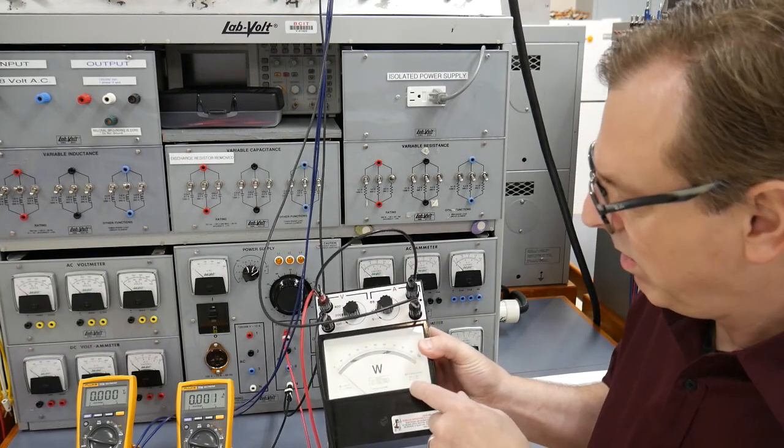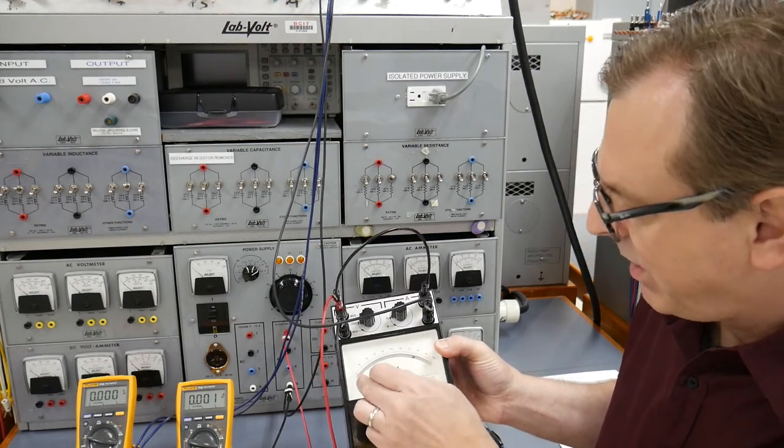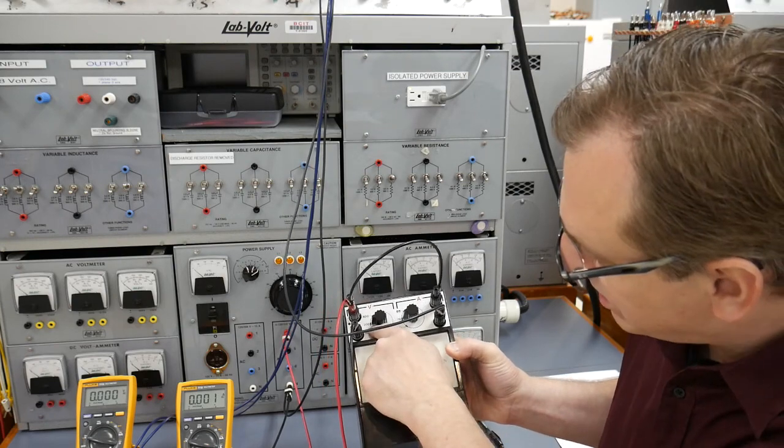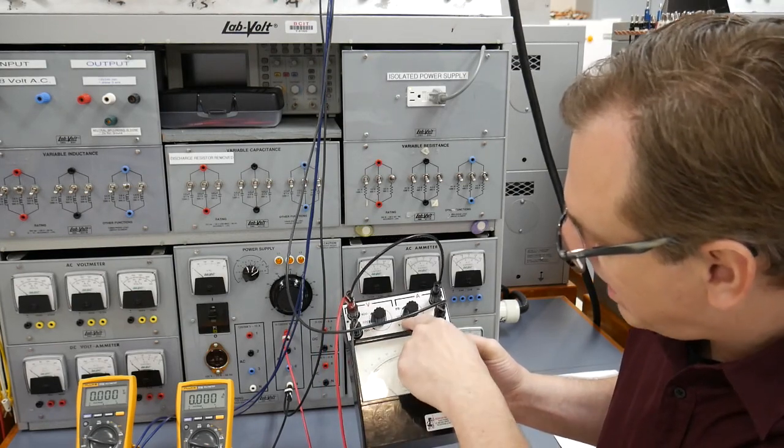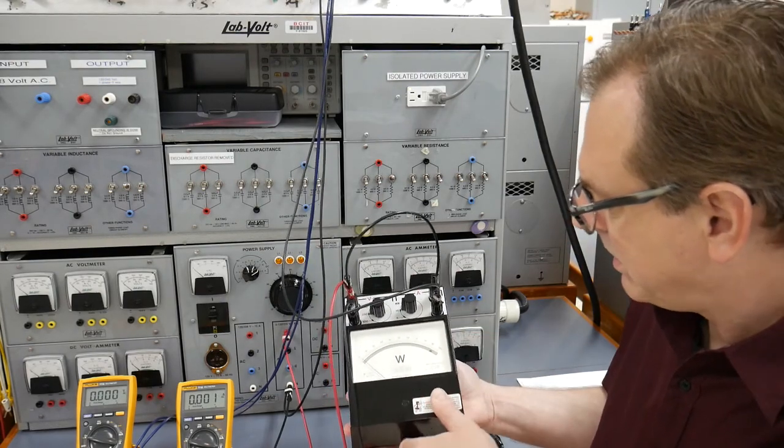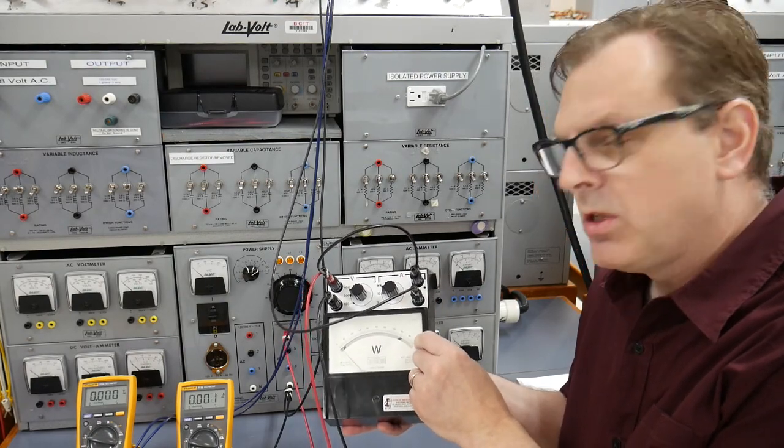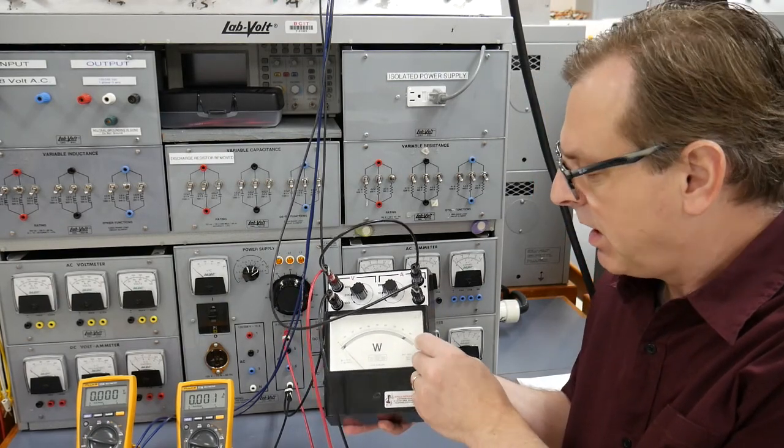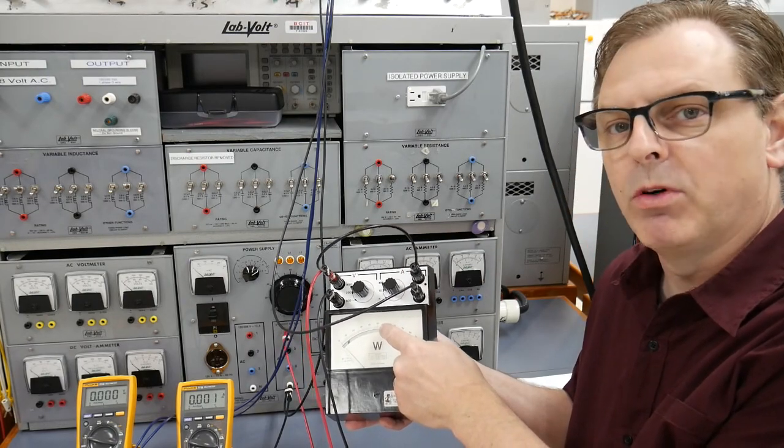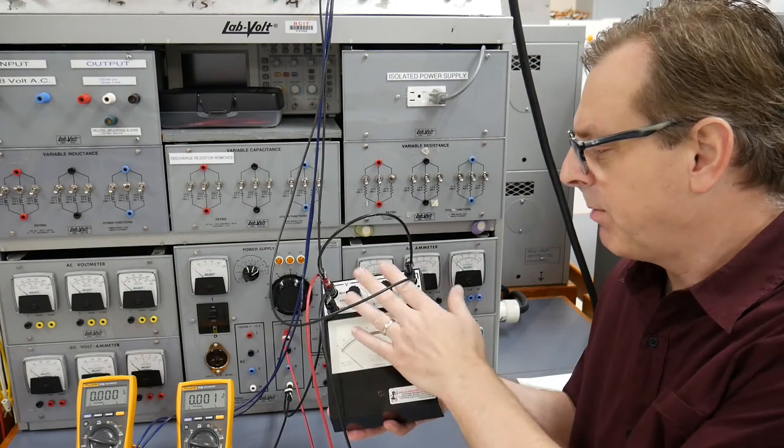Remember that the scale of the watt meter goes from 0 to 100. That's a percentage of whatever potential it's being put across. In this case we've got 200 volts times 10 amps, so that's a total of 2,000 watts. If it was sitting at 100, that would be 2,000 watts. If it was sitting at the 50% reading level, it would be reading a thousand watts.